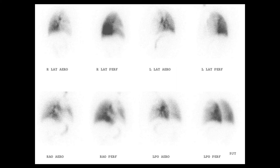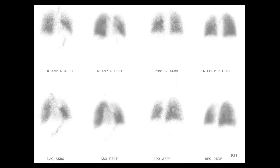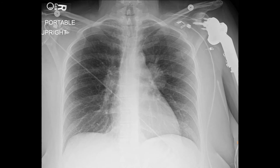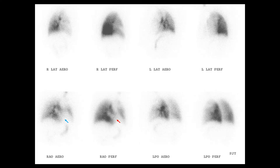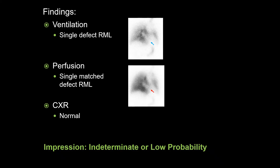This case will be presented on three slides. The first two demonstrate DTPA ventilation and perfusion images in multiple projections side by side. The third is the comparison chest radiograph. Take some time to review the images. The most significant finding in this exam is a single matched ventilation and perfusion defect in the right middle lobe. The comparison chest radiograph is normal. The constellation of findings in this case are neither characteristic of PE present or PE absent, classifying this study as indeterminate.